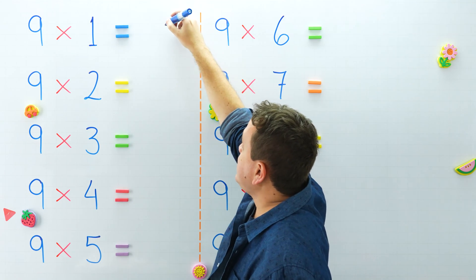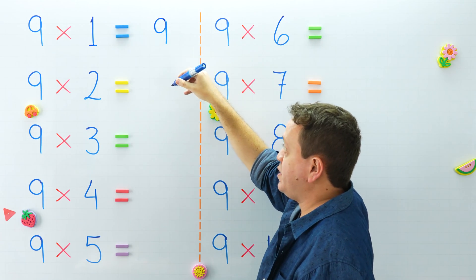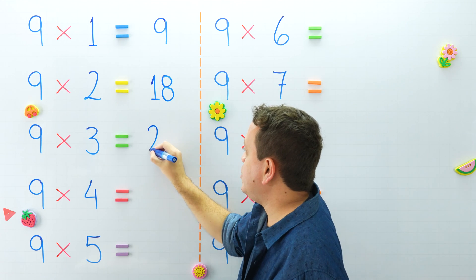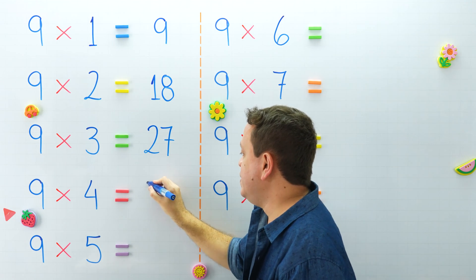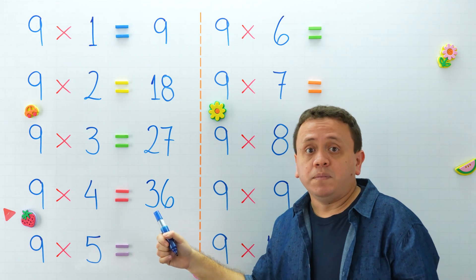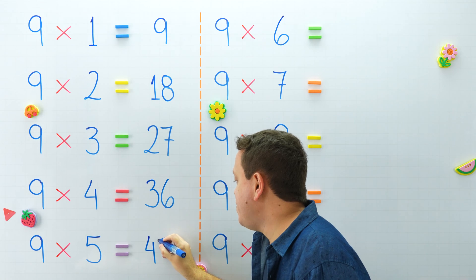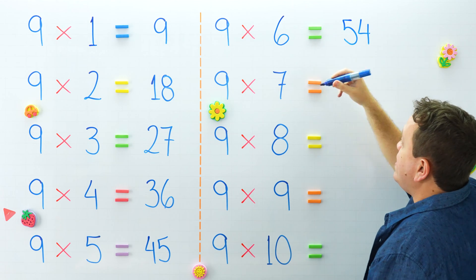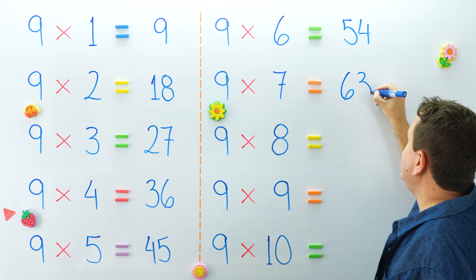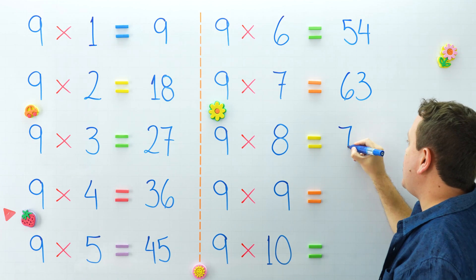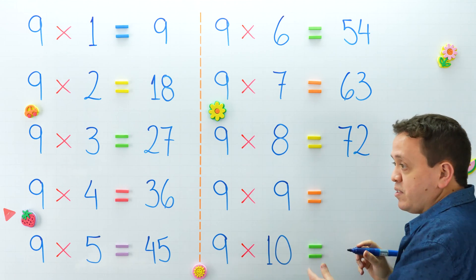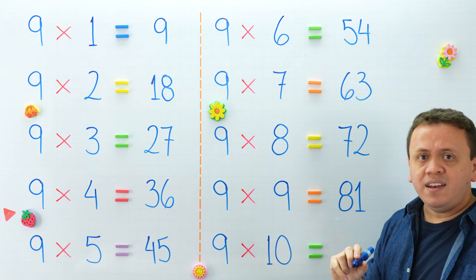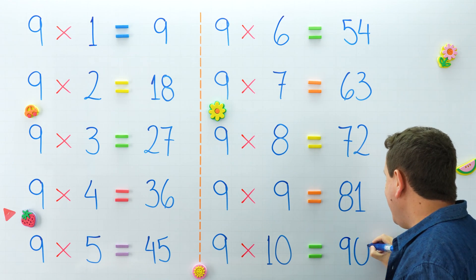And now the 9 times table. 9 times 1 equals 9, and 9 times 2 is equal to 18. 9 times 3 equals 27, and 9 times 4 is equal to 36. 9 times 5 equals 45. Over here, 9 times 6 is equal to 54. 9 times 7 equals 63. And 9 times 8 equals 72. 9 times 9 is equal to 81. The last one — what is 9 times 10? Well, 9 times 10 equals 90.